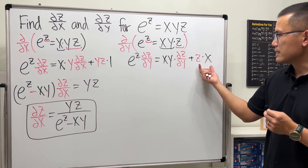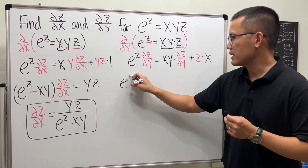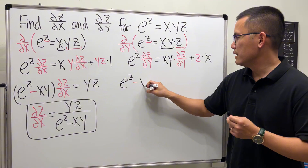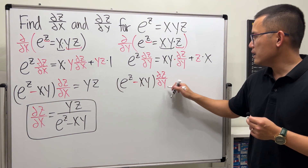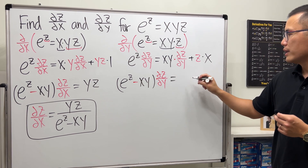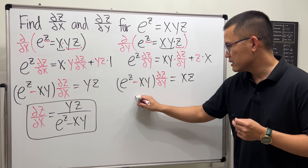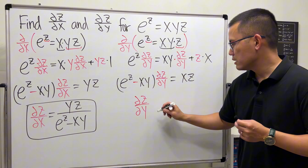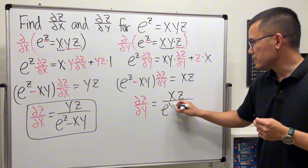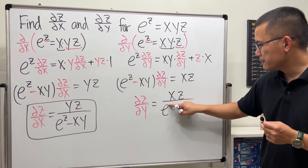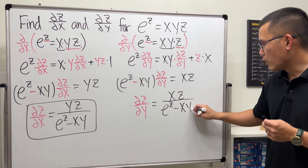Move these two things to the other side and factor, similar to before. We get e to the z minus xy times partial z with respect to y equals negative xz. Divide that to both sides, so partial z with respect to y is equal to negative xz over e to the z minus xy. And then we are done.